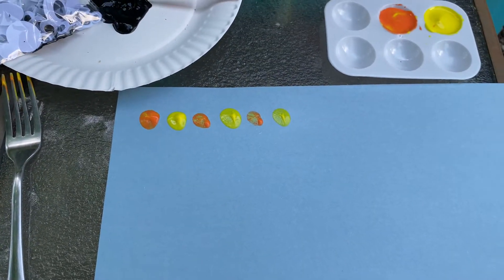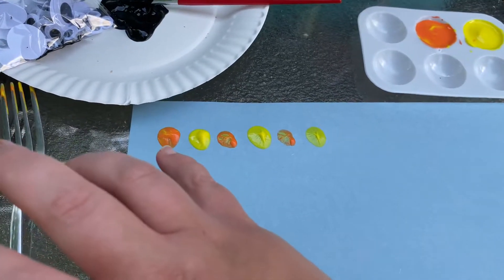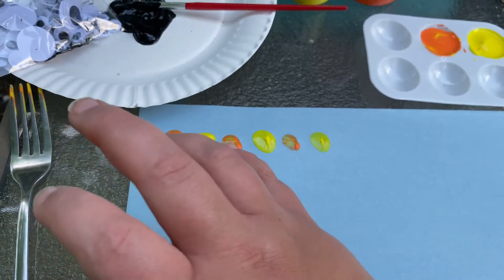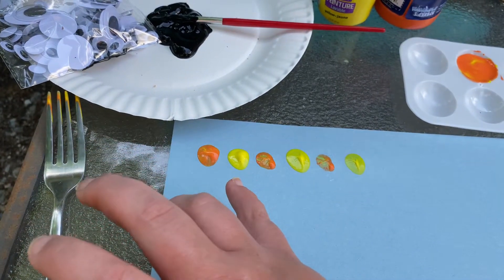Today we're going to be learning about patterns. A pattern would be something like this, where you would have one thing and then another. One thing and then another. So I did one orange fingerprint and then one yellow.